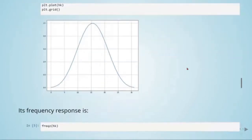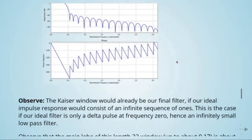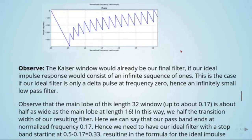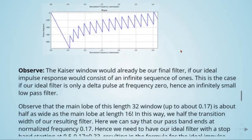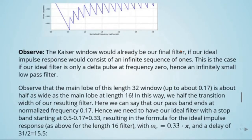The Kaiser window with beta equals 8 and length equals 32 would already be our final filter if our ideal impulse response would consist of an infinite sequence of ones — that is the case if our ideal filter is only a delta pulse at frequency zero, hence an infinitely small low-pass filter. Observe that the main lobe of this length-32 window is up to about 0.17, which is half as wide as the main lobe at length 16. In this way we have the transition band width of our resulting filter. We can say that our pass band ends at normalized frequency 0.17.